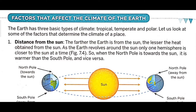Let us look at the factors that determine the climate of a place. In our last class we discussed about climate. Today we will discuss the factors affecting the climate of the earth. We have known that there are three types of climates: tropical, temperate, and polar.